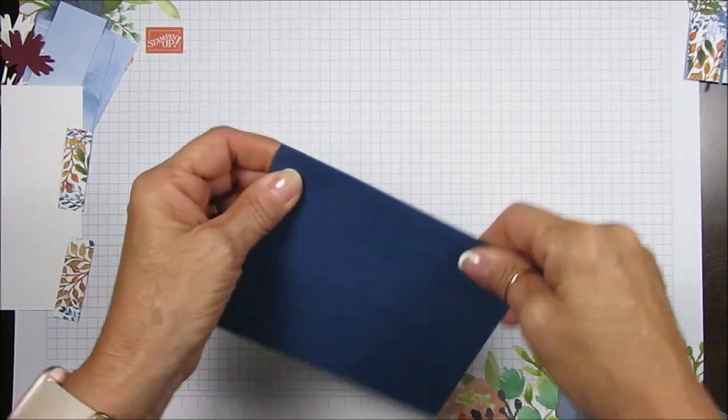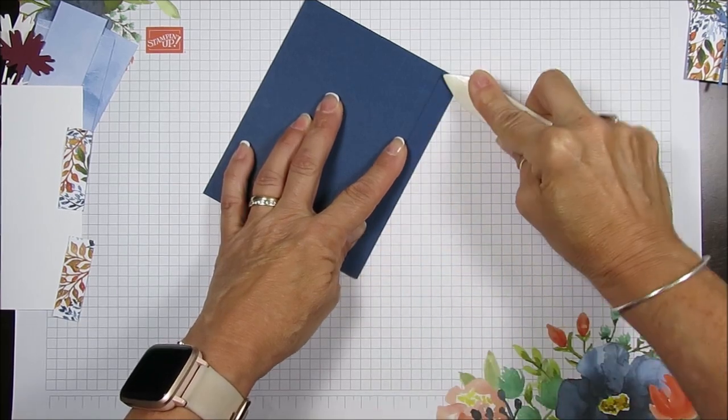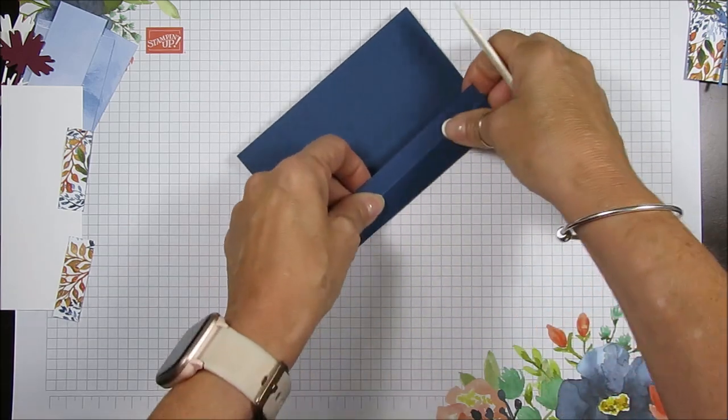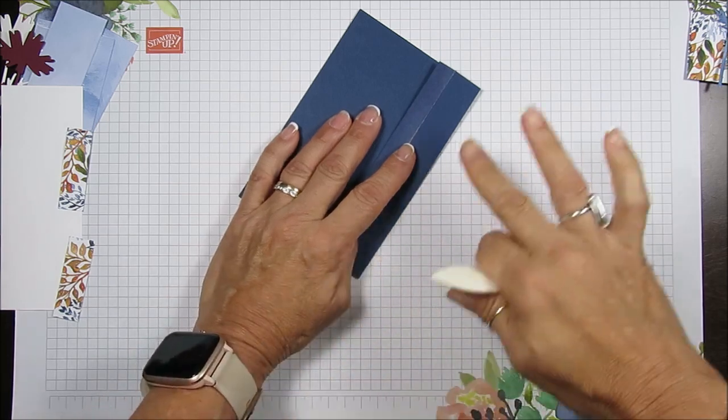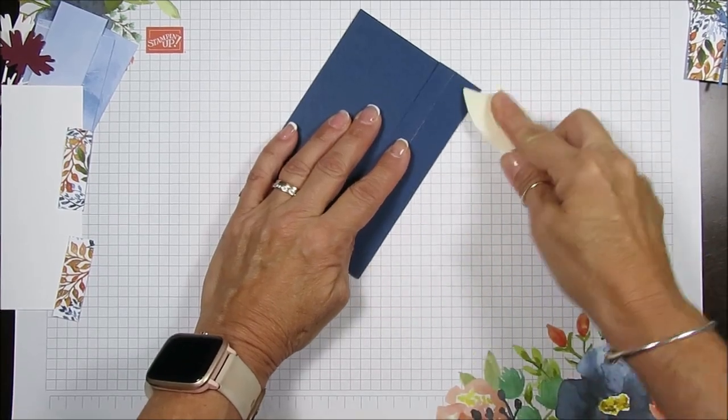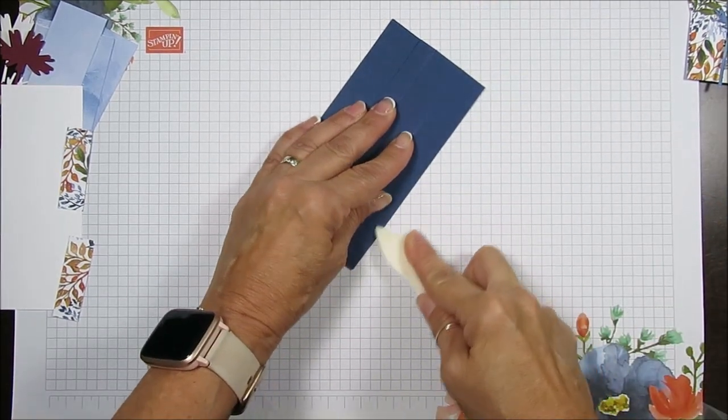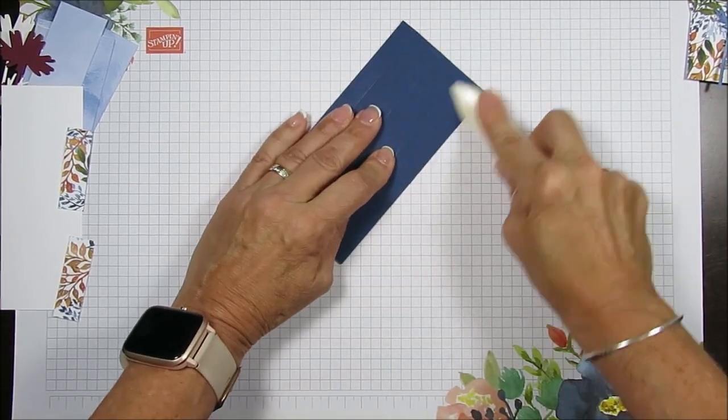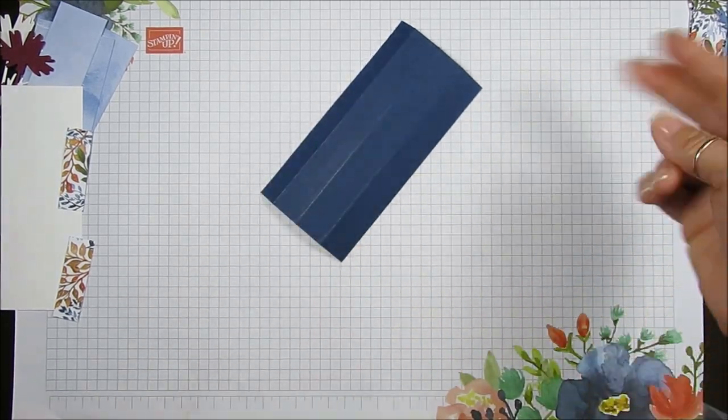We're going to score at - I first score at half inch. I cannot say it enough: reinforce your score. This is going to make or break the deal to lay flat and so on. Very important that you reinforce. The next one is at one and one quarter, then at two, and then at two and three-quarter.